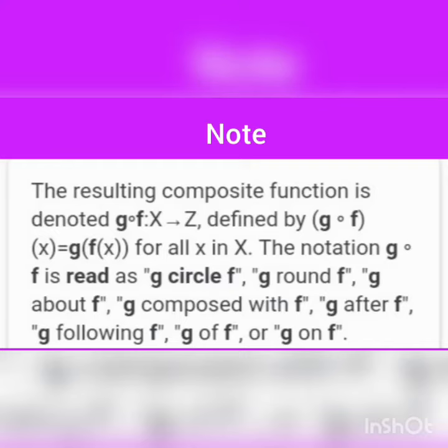One important note: the symbol g circle f can be read as g round f, g about f, g composed with f, g after f, g following f, g of f, or g on f.